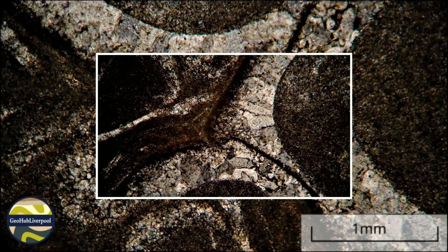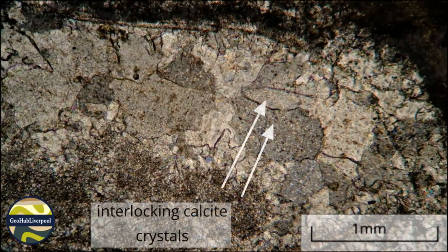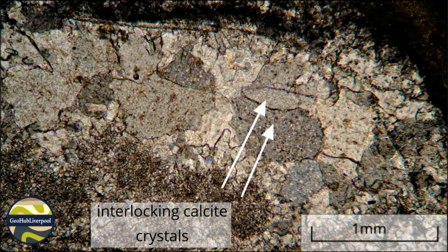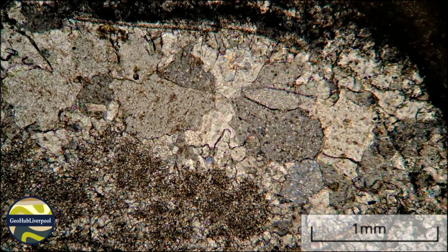No internal structure is shown in these skeletal remains. The shell was originally made of a form of calcium carbonate called aragonite. This was dissolved out and the void filled with calcite, which is another form of calcium carbonate. These interlocking crystals of calcite are described as drusy sparite. The crystals show an increase in size from the outer edge towards the middle of the larger bioclasts.